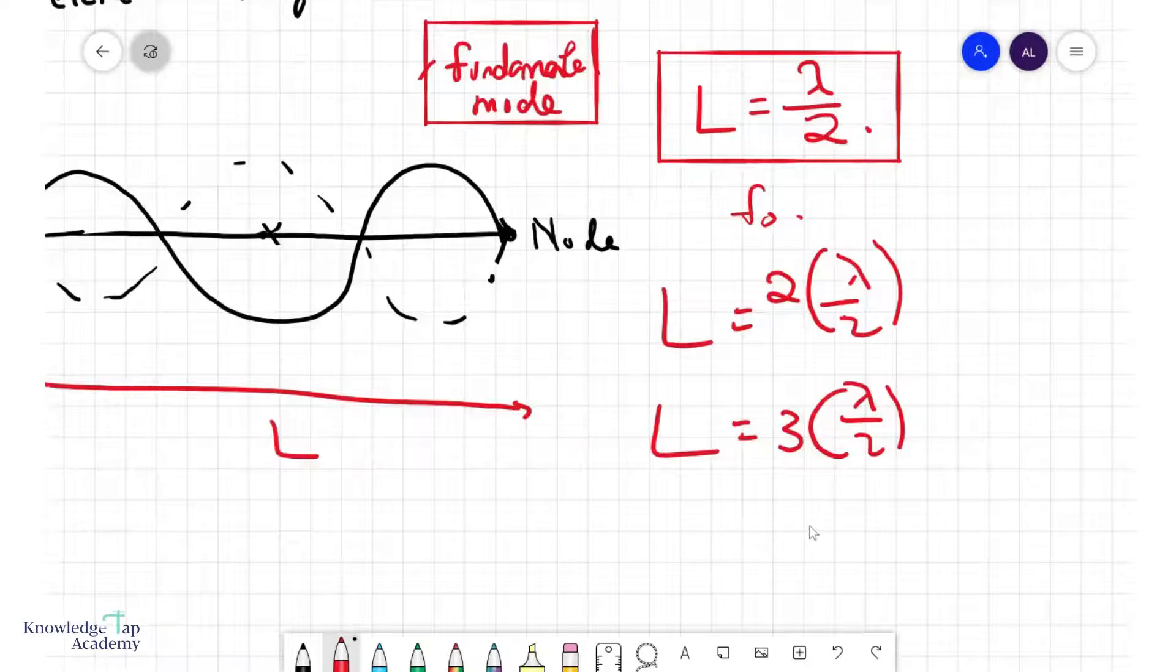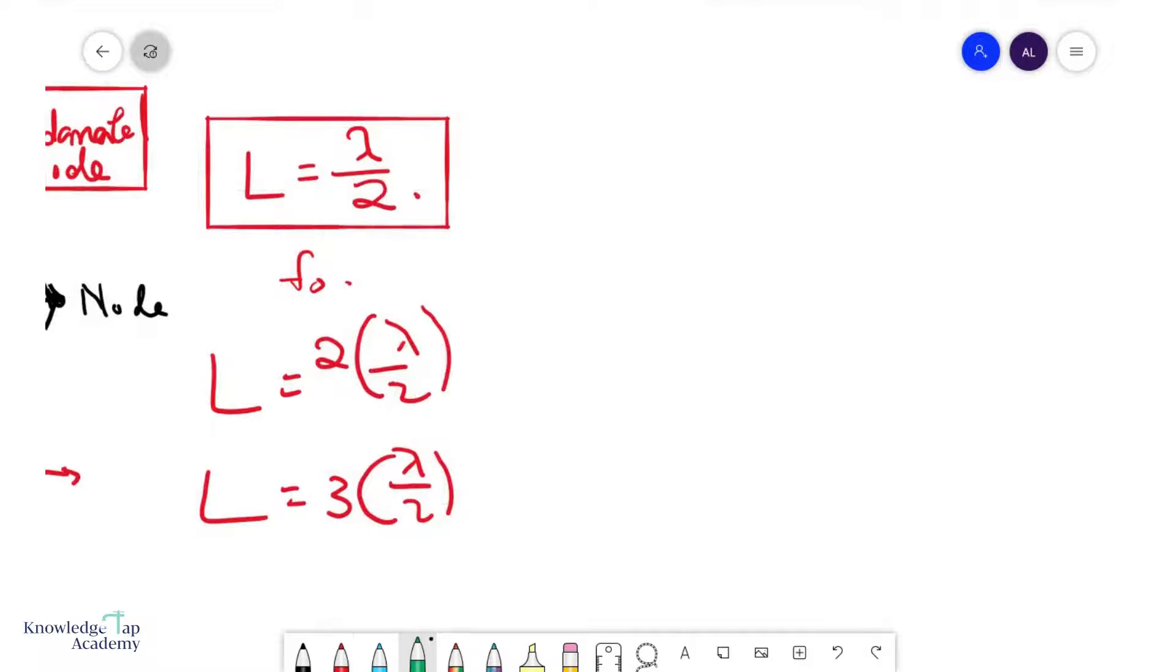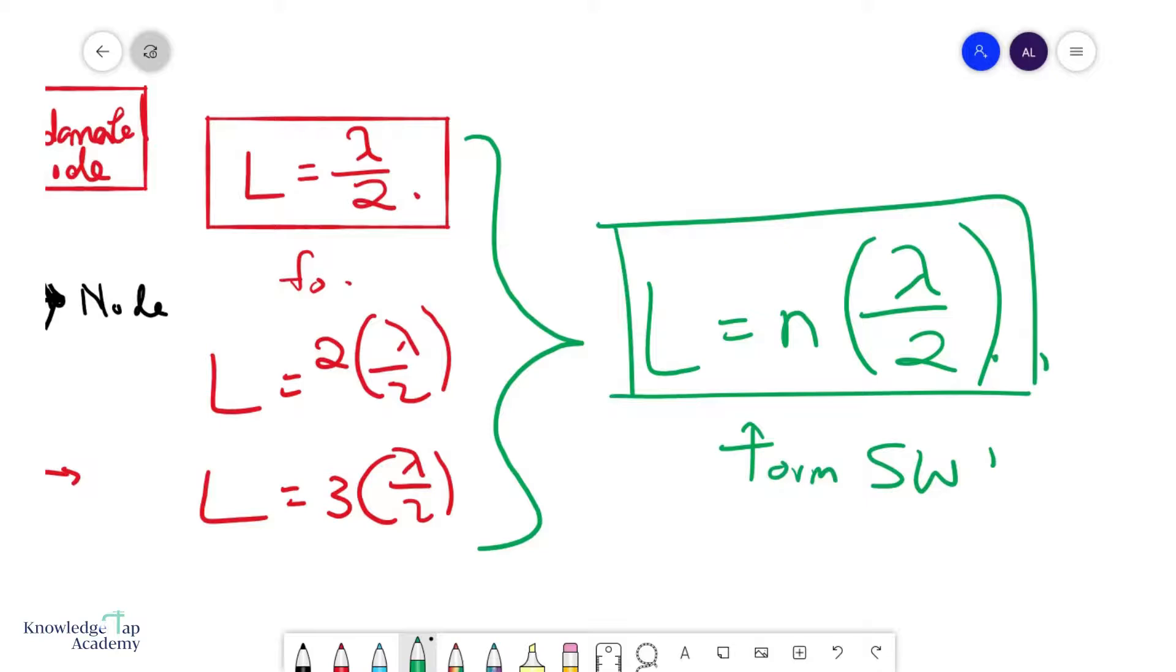Now what's going to happen here is that you realize that there are really many ways you can do this. And so the general formula for this is L, the length of the string, as long as it equals to some integer n times lambda over two, then you will form a stationary wave on this string. And so this is what you need to remember. Sub in L, sub in lambda, as long as n is some integer value, then you will form a stationary wave.